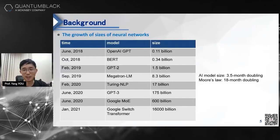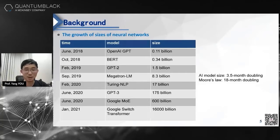We know Moore's Law means CPU or GPU computing power can double in 18 months. However, the size of AI models can double in just 3.5 months — much, much faster than the growth of our AI chips.